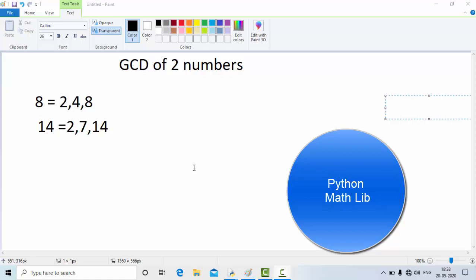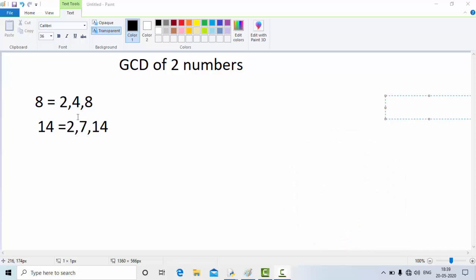For the example purpose, I have taken two numbers, 8 and 14. For 8, the divisors are 2, 4, and 8, whereas for 14, the divisors are 2, 7, and 14. If you see these divisors, what is the common divisor among them? In this case, it's 2, and that is the greatest common divisor among those two.